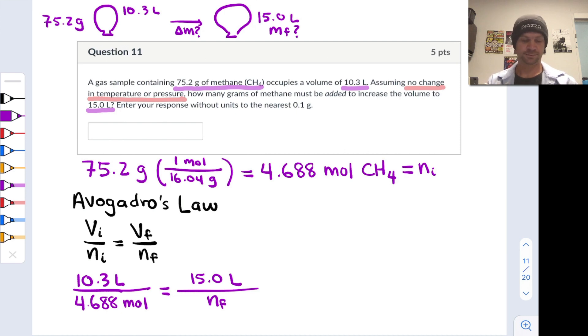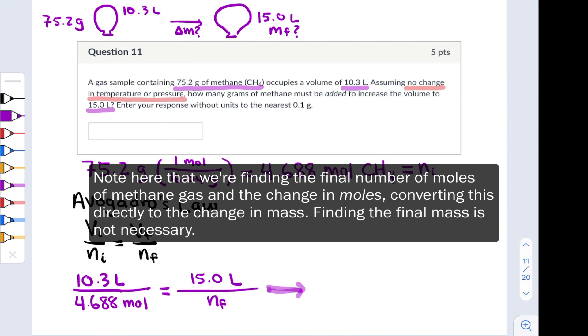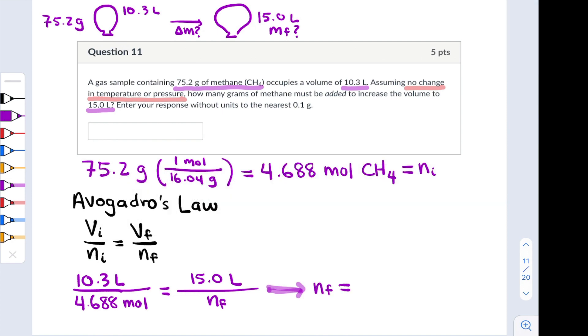The final number of moles of the gas when it occupies a volume of 15 liters. With a little cross multiplication we can figure out the final number of moles. Rearranging and solving for n sub f, I arrive at 6.827 moles.